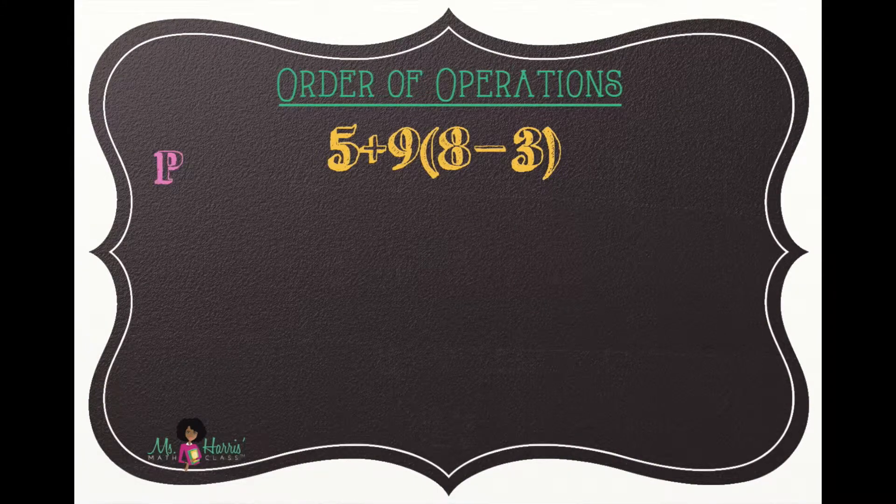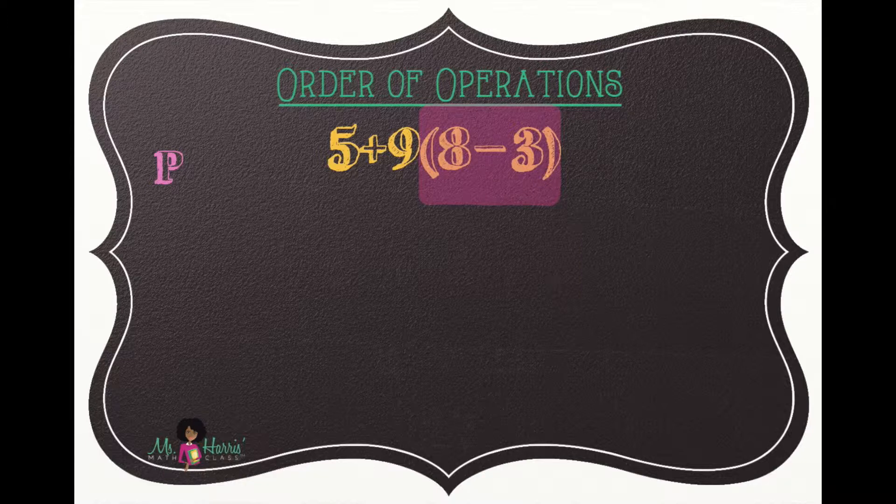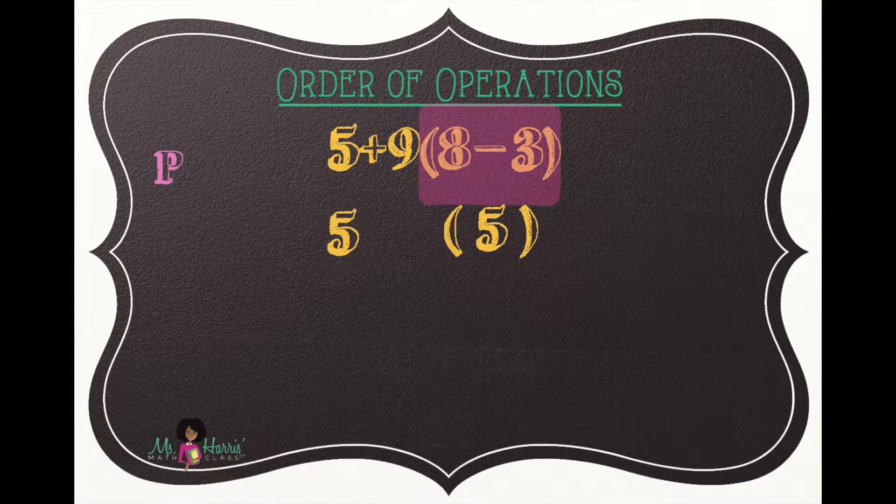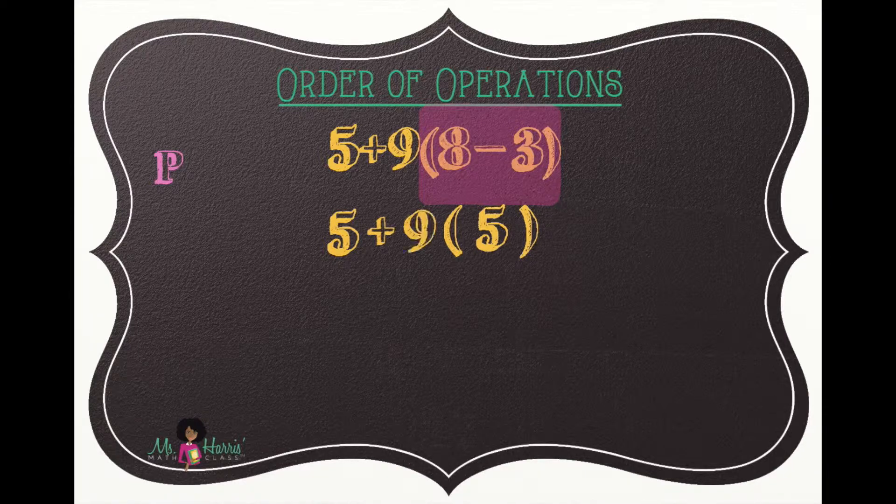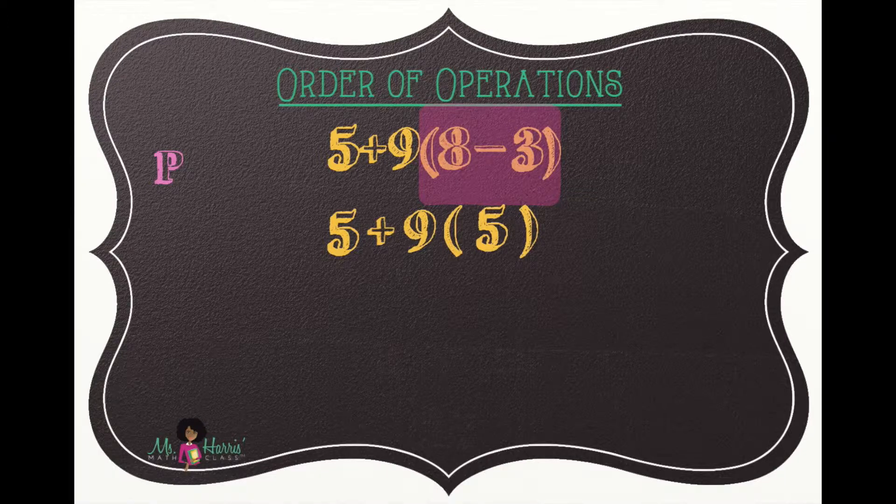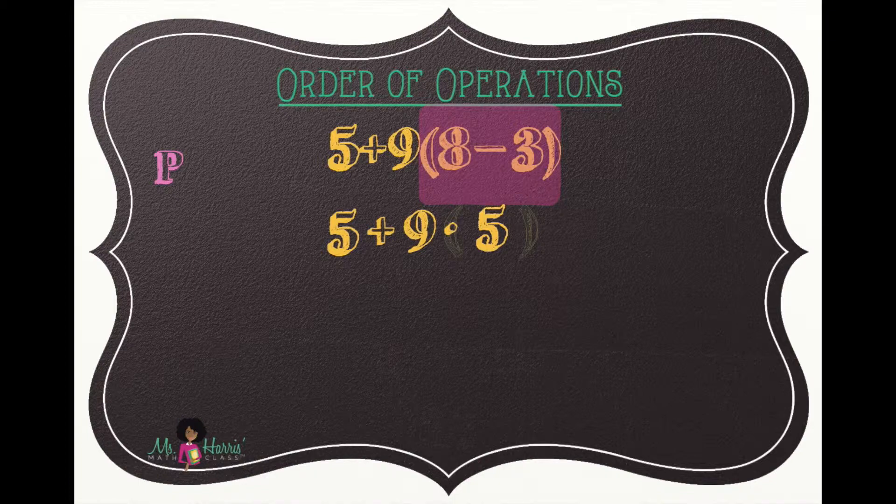We begin and stop with P because we have parentheses in this problem, so we highlight eight minus three. Eight minus three is five, and we bring down the remaining numbers and operations. Now this is where it gets tricky. Once you've completed everything within the parentheses, we move the parentheses and replace it with the multiplication sign.